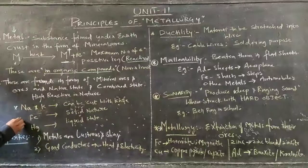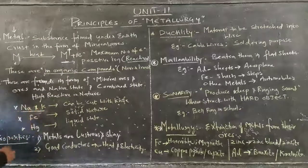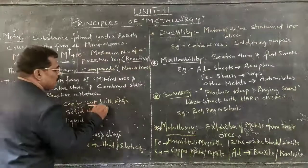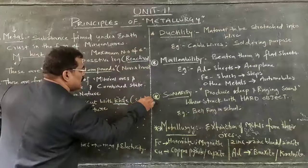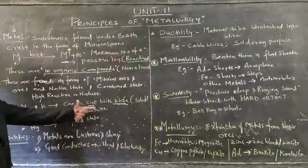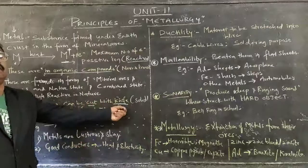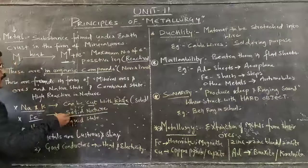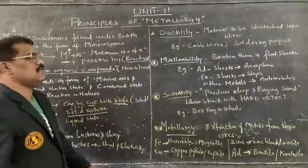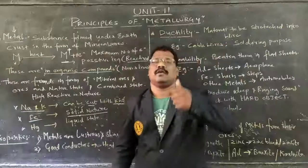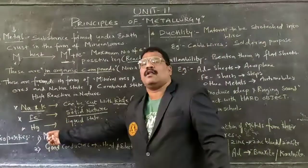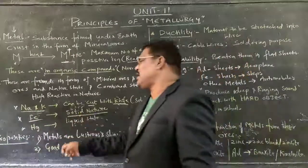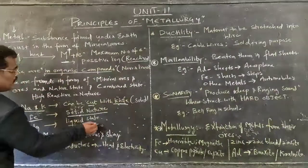Here are a few examples. Sodium and potassium metals can be cut with a knife as they are soft in nature. When it comes to iron, it exists in solid state and due to that it is much stronger.